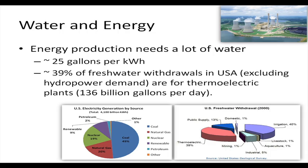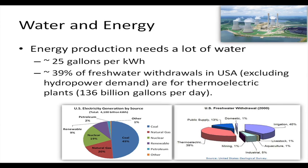Energy production needs a lot of water — we need 25 gallons per kilowatt hour. A gallon is approximately 3.8 to 4 liters, so that is around 95 to 100 liters of water needed per kilowatt hour. Nearly 40 percent of the fresh water withdrawals in the USA, including hydropower demand, are for thermoelectric plants, which is 136 billion gallons per day. Thermoelectric plants are also the most common in India, and our energy system efficiency is even lower, so we use much more water per kilowatt hour.